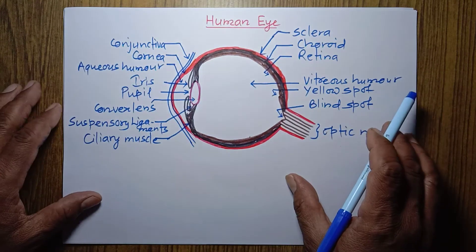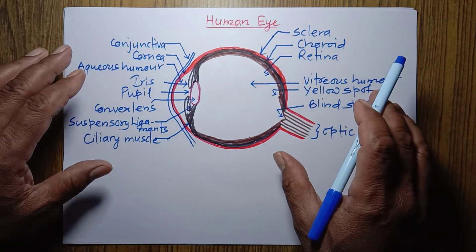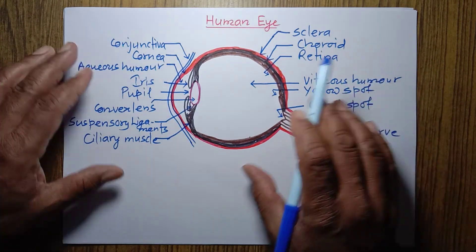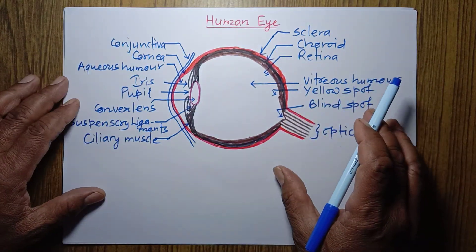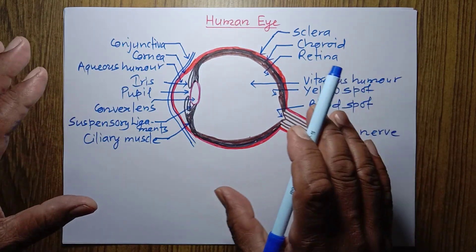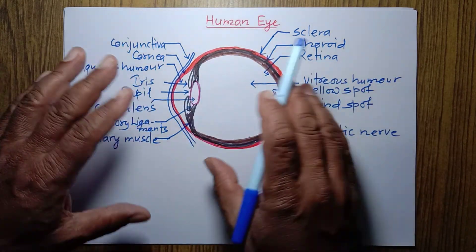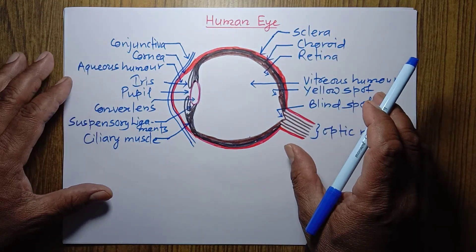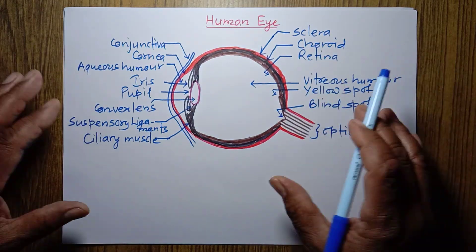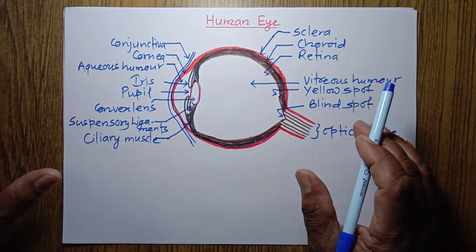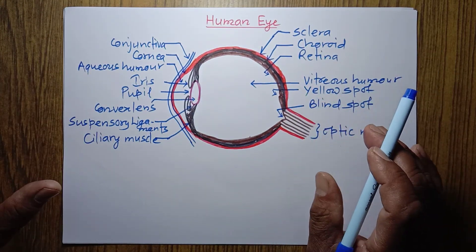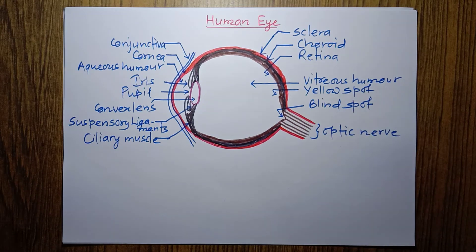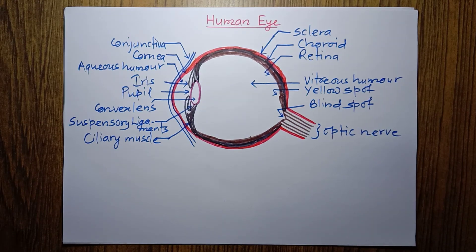These are the different parts of the eye. Some of the parts are only related to physics, and all the parts are related to biology. In the next class, we'll continue with the defects of the human eye.